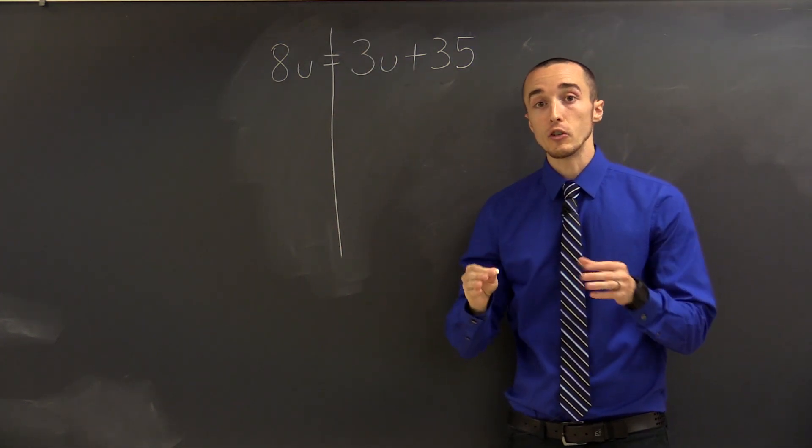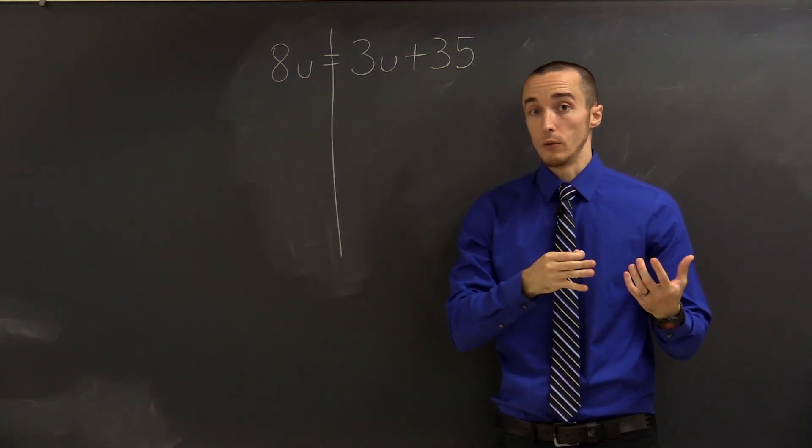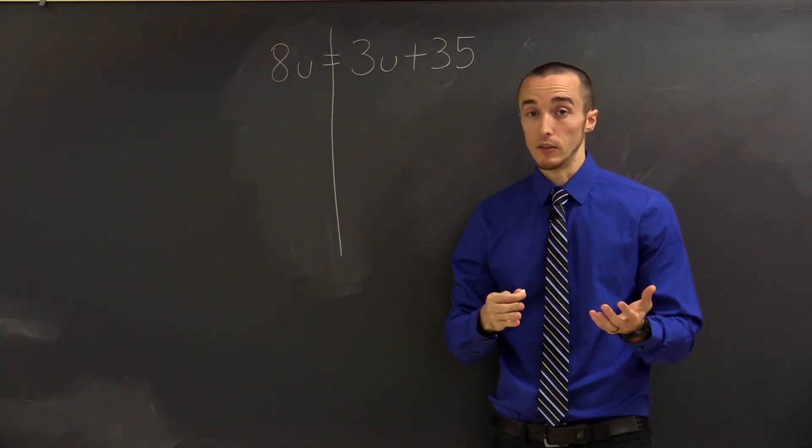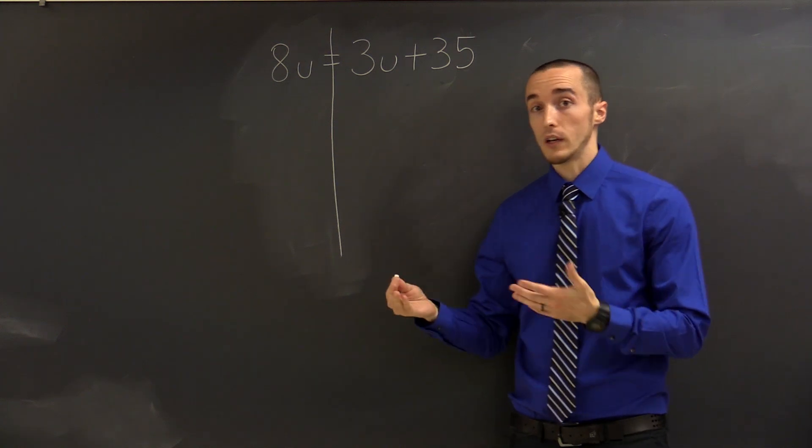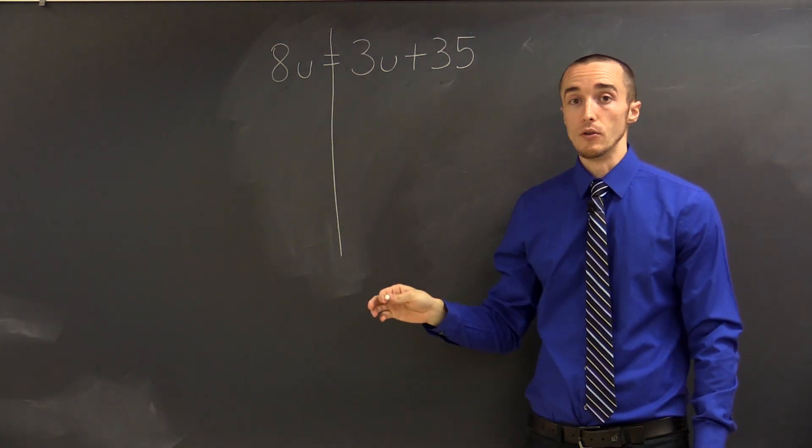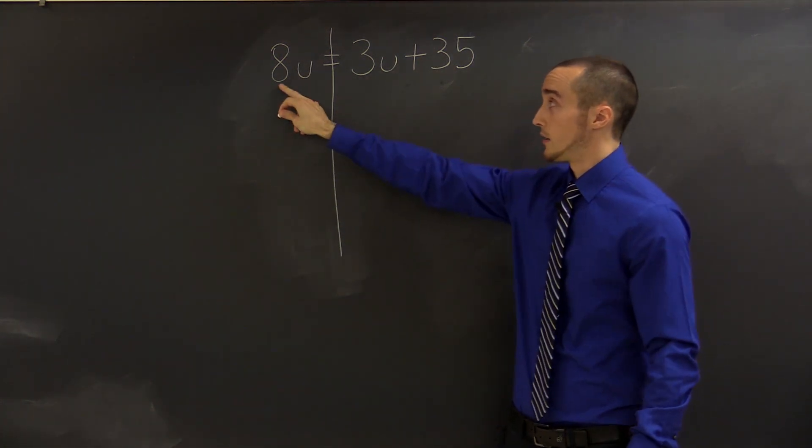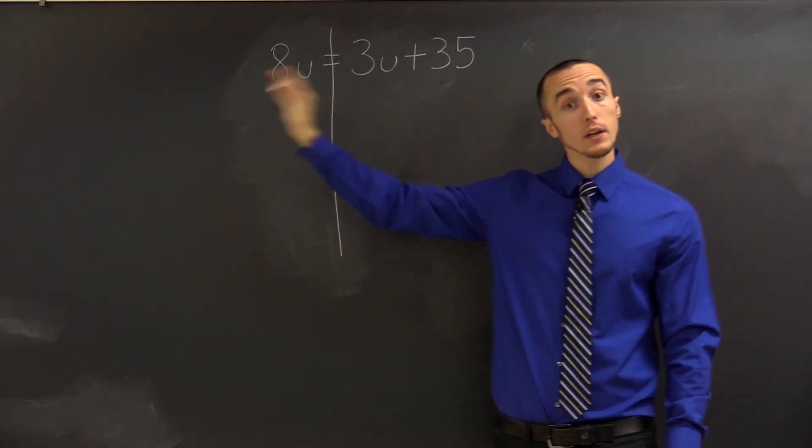Well, the idea here is to either get all the variables to the left of the equal sign or to the right, and it doesn't really matter which place you go. For me, I always look at both terms, in this case 8u and 3u, and I go to the side with the bigger coefficient. In this example, 8 is bigger than 3, so I'm going to go to the left.